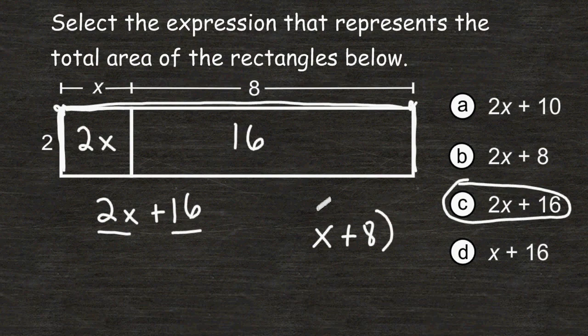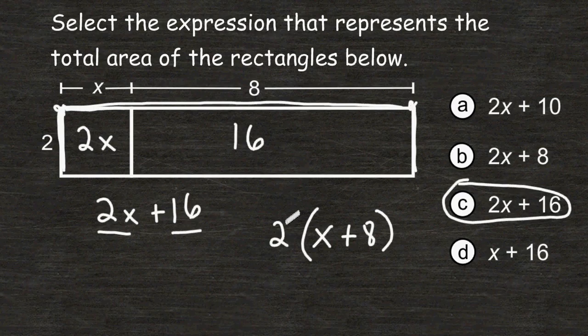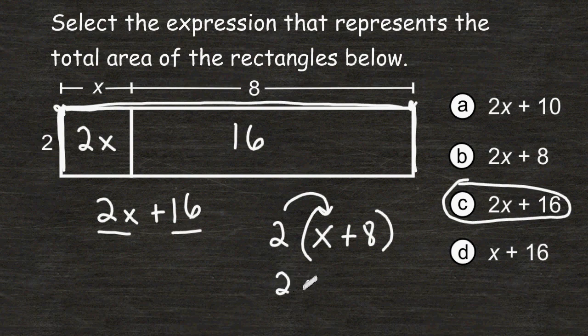And we would multiply that entire quantity by 2. And we would use the distributive property to carry out our multiplication. 2 times x is 2x, and 2 times 8 is 16.